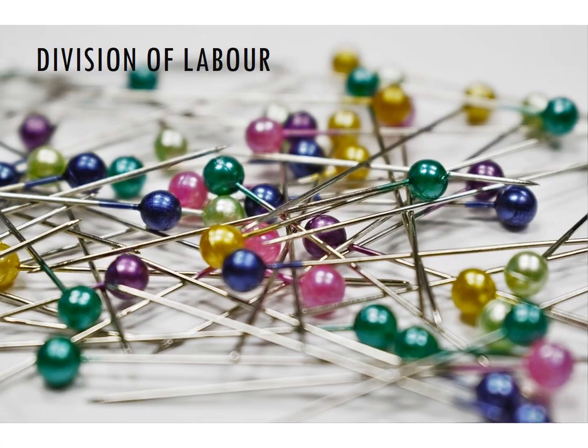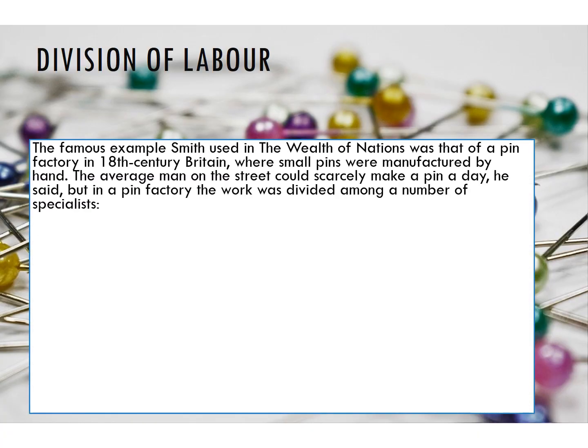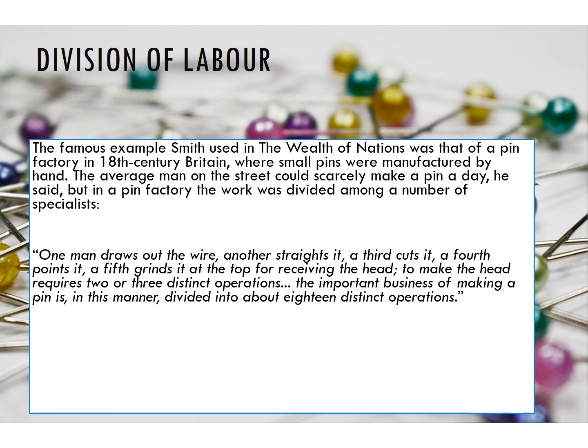A famous example Adam Smith gave to illustrate this was a pin factory in the late 1700s in Britain. The average man on the street, if you asked him to make a pin from start to finish, could barely make one pin in a day. But if you were to take the task and split it up, giving each person one task in the process of making a pin, he argued you could be a lot more efficient. He outlined all the different jobs involved in making a pin — straightening the wire, cutting it, putting the head on top — and said if you make one person responsible for each stage, becoming highly specialized and skilled in that role, you could see a large increase in productivity.